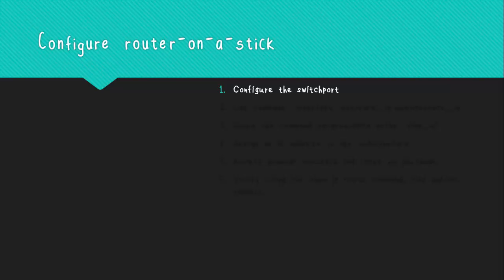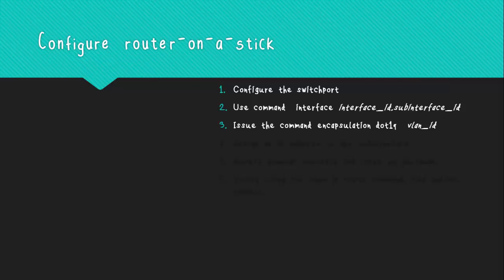Then, to create the subinterfaces, use the command 'interface' followed by the interface ID, then a dot, then the subinterface ID, which normally reflects the VLAN ID. This will take you from global configuration mode to the subinterface configuration. Once there, use the command 'encapsulation dot1q' followed by the VLAN ID.